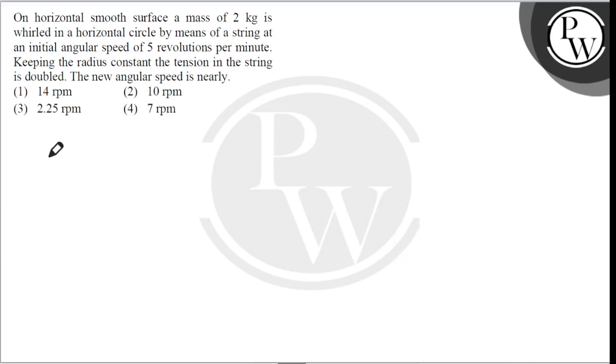initially, the tension T is equal to m omega square r. Second tension is 2T is equal to m omega dash square r. So, radius constant, the ratio of 1 upon 2 is equal to omega square upon omega dash square.